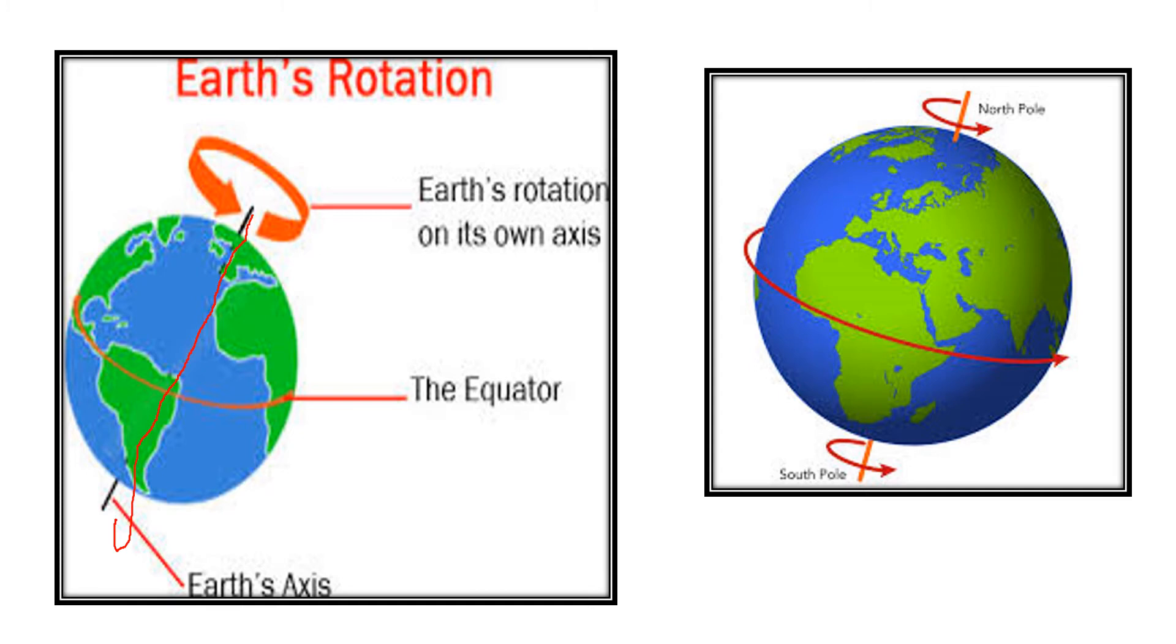This is North Pole. This is South Pole. And Earth is rotating from west to east. Like this. You can see the arrow over here. This arrow is showing from west to east.